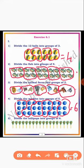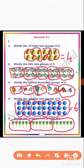Divide the lollipops into groups of 6. We can make groups of 6: 6, again 6 and again 6. How many groups are there? There are 3 groups, each group having 6 lollipops. How many lollipops are there? Totally 18 lollipops. 18 lollipops are equally divided into 3 groups, each group having 6 lollipops. This is the 1st main question completed.